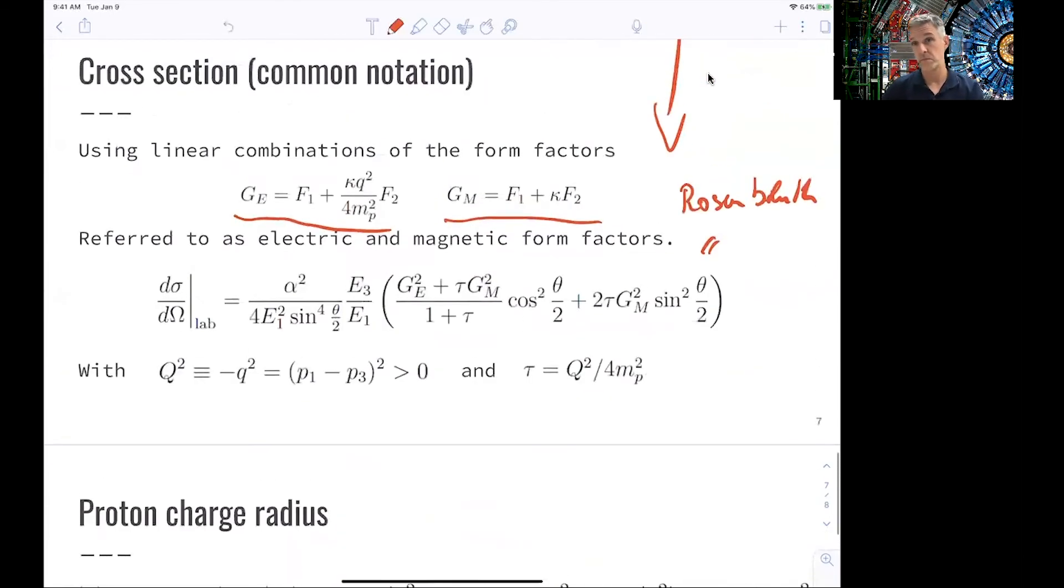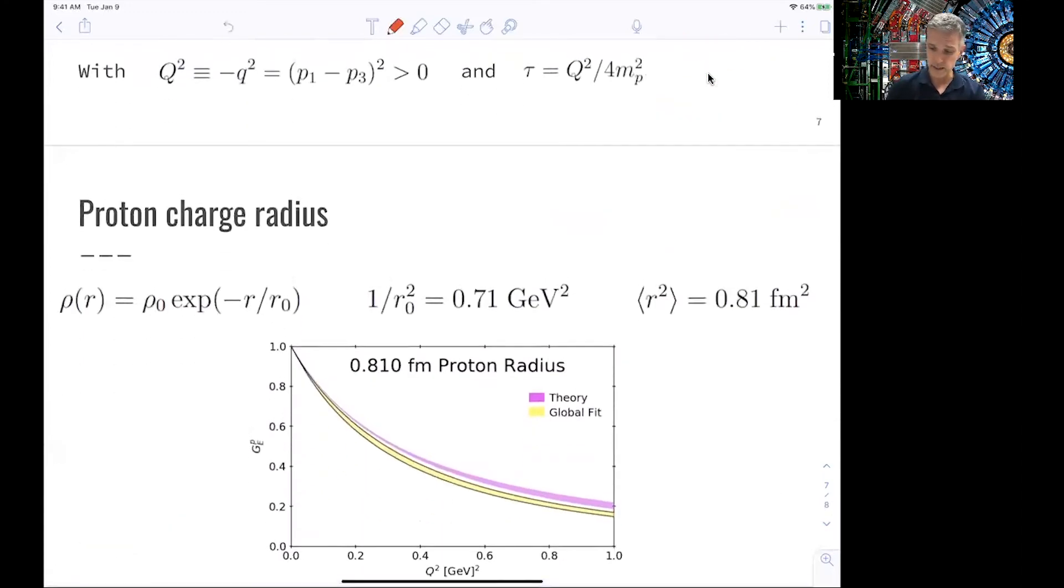But we have done that by using a Fourier transform of the charge distribution. So if we now measure the cross-section, we can infer the charge distribution of the proton and with that the radius, the charge radius of the proton. This has been done, and we find that the RMS, the root mean square of the proton charge, is 0.81 femtometers.